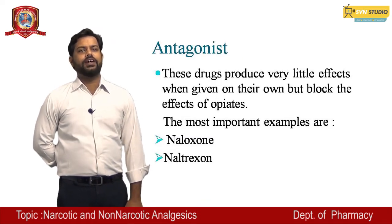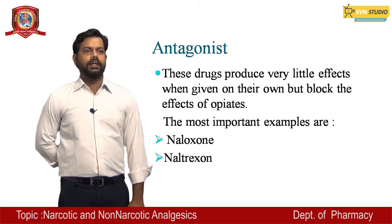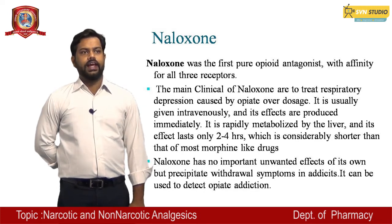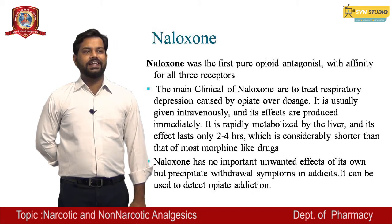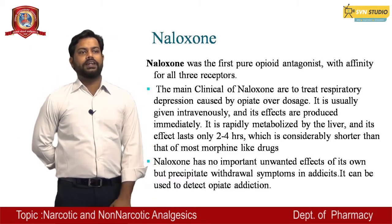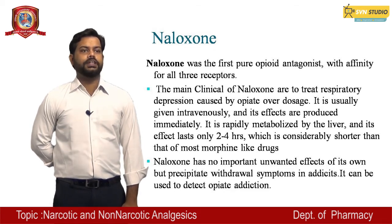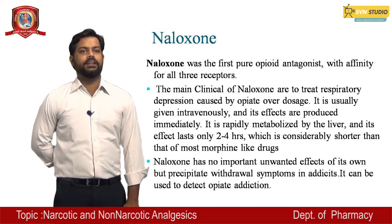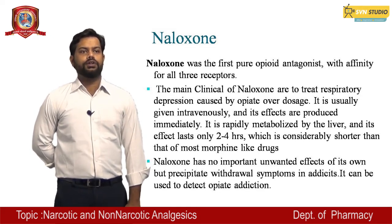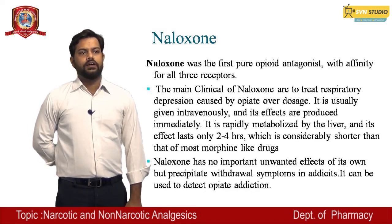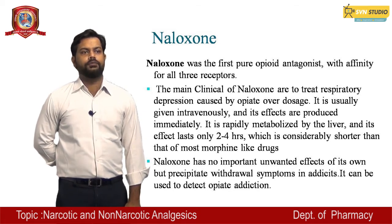Antagonists: these drugs produce very little effect when given on their own but block the effect of opioids. The most important examples of antagonists are naloxone and naltrexone. Naloxone was the first pure opioid antagonist with affinity for all three receptors. Its main clinical use is to treat respiratory depression caused by various opioids. It is usually given intravenously and its effects are produced immediately. It is rapidly metabolized by the liver and its effect lasts only 2–4 hours, which is much shorter than morphine-like drugs.